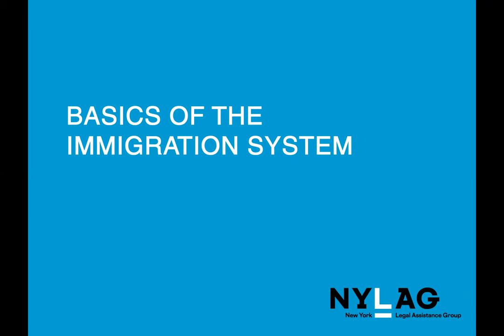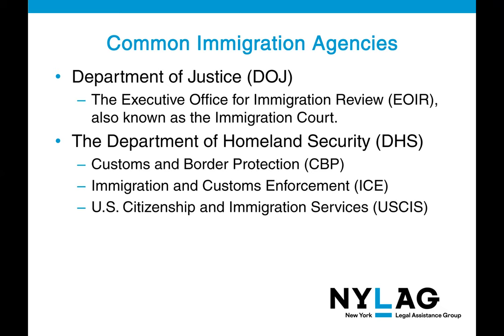To begin, I'll give an overview of the immigration system and the basics. There are a number of common immigration agencies that make up the immigration system. One of those agencies is called the Department of Justice, or DOJ. Within the DOJ exists the Executive Office for Immigration Review, or EOIR, which is also known as the immigration court system.